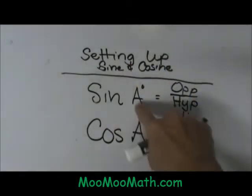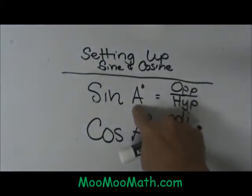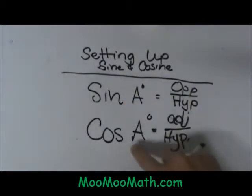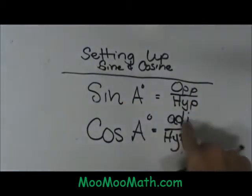Let's review. Sine of an angle, and that can be any measurement of an acute angle in a triangle, is the opposite over the hypotenuse. Cosine of the acute angle A is adjacent over hypotenuse.